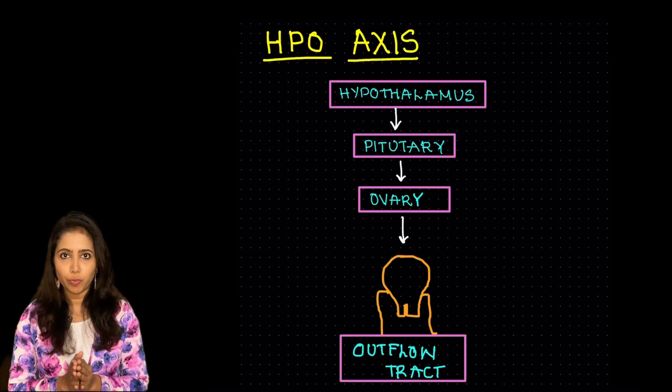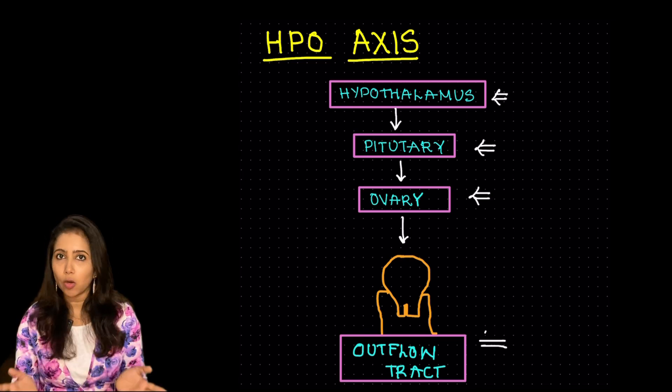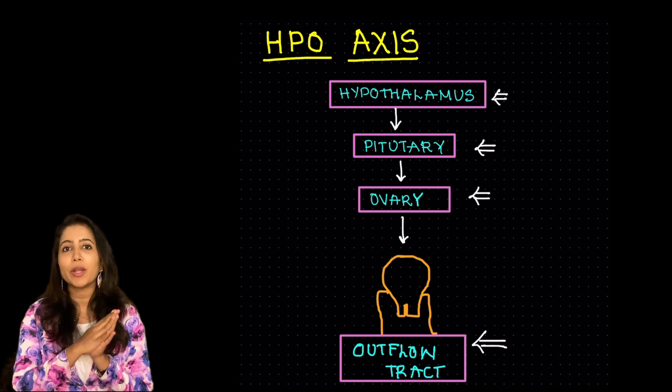So primary amenorrhea could be due to problems at the level of hypothalamus, pituitary, ovary or the outflow tract. Let us see them one by one.